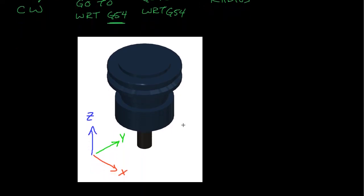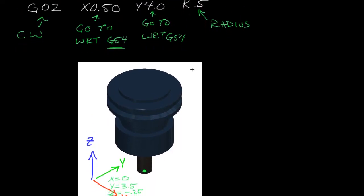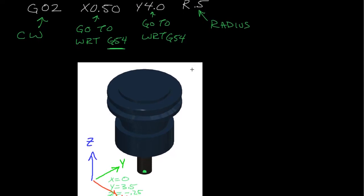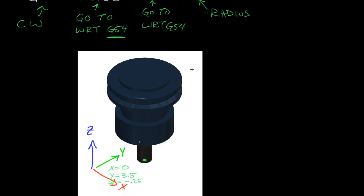Let's look at this cutter here. The initial position of the cutter is X equals 0, Y equals 3.5, and Z equals negative 0.25. Then it says to go to a position of X equals 0.5, Y equals 4, and follow a radius of 0.25.